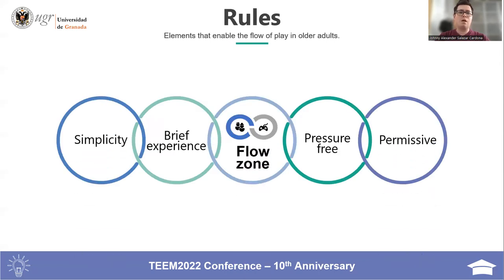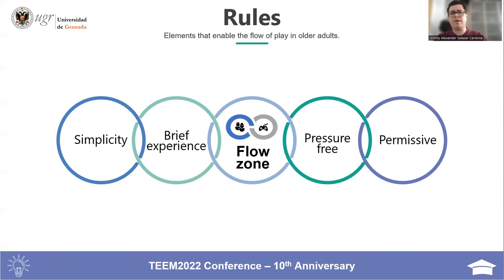Rules. All elements of the game should be oriented to offer the player the upper play from the flow zone — understood as the zone in which there is a balance between the challenges of the game and the skills of the player. This means simple rules, a familiar environment, and short play loops involving some cognitive challenge that are not very demanding.